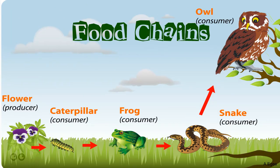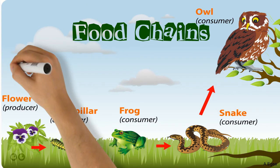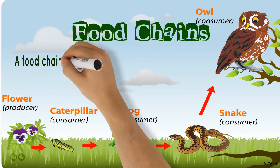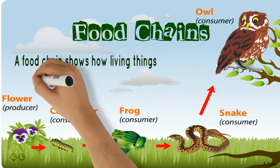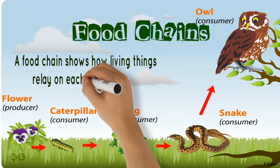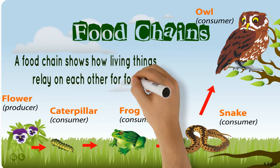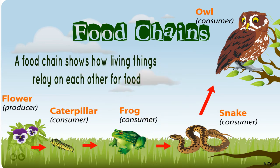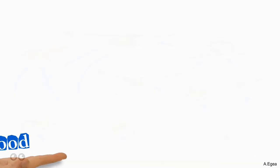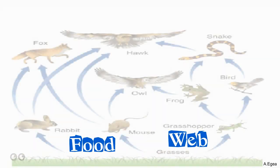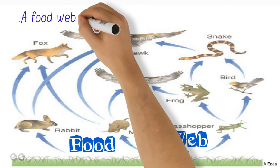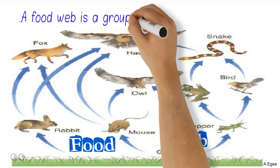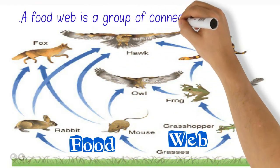A food chain shows how living things rely on each other for food. A food web is a group of connected food chains.